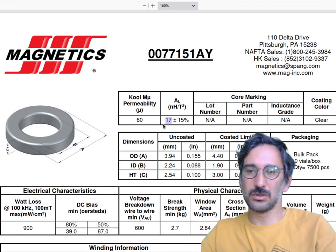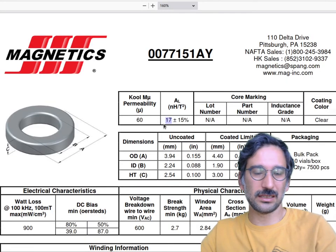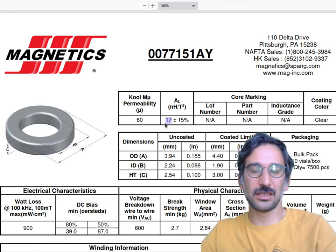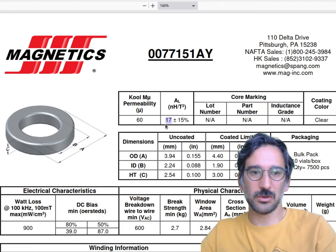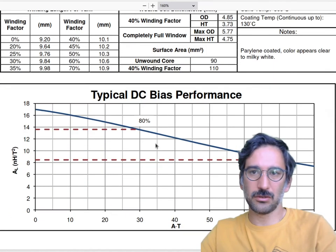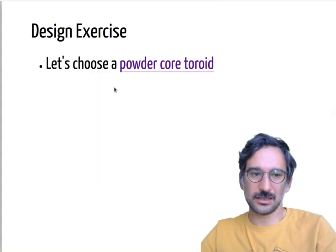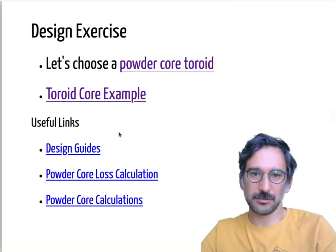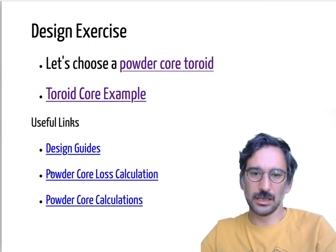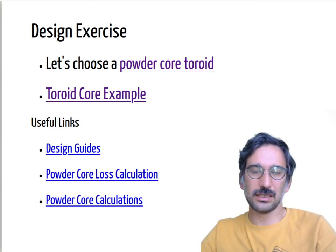You need to be careful — don't just design using the nominal AL number. Double-check with your actual current ratings to ensure you are not saturating the core or significantly changing inductance characteristics. We'll discuss more details in the recitation.